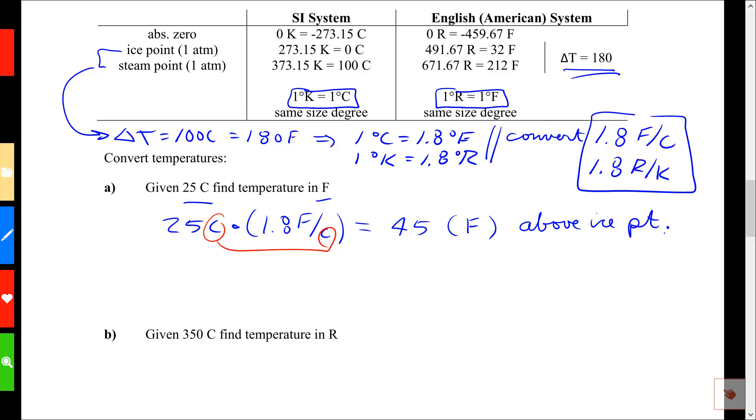And to get to proper degrees Fahrenheit, I've got to add the ice point, which for Fahrenheit is here. I'm going to add 32 degrees. Add the ice point. And when I do that, I get 77, and that is indeed degrees Fahrenheit, and that's the answer to example A.